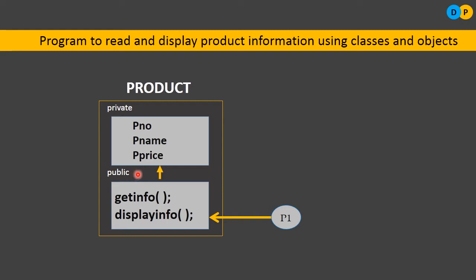It is very clear from the picture. If you want to access these data members kept in private access specifier, it is possible only via the member functions that are kept in public access specifier. For the class product, we will be creating an object by the name P1. The difference between the previous video program and this particular program is that the member functions within the class are just declared. They are not completely defined within the class. Get info and display info functions are just declared within the class but they are defined outside the class.